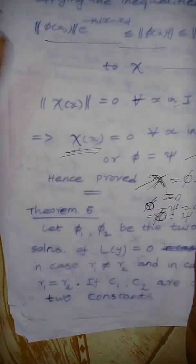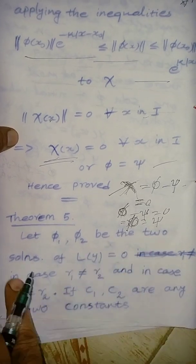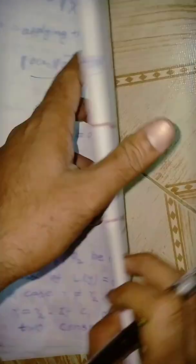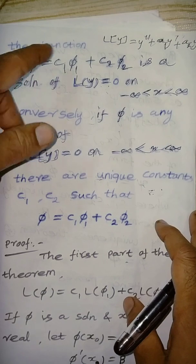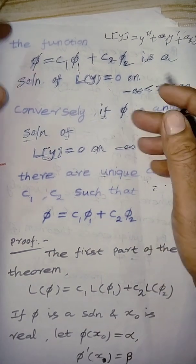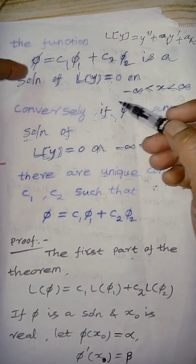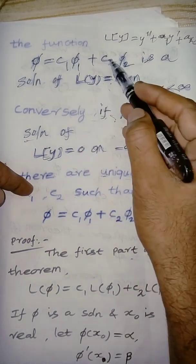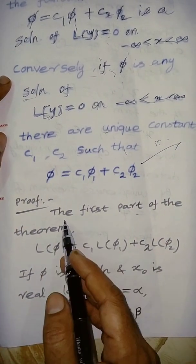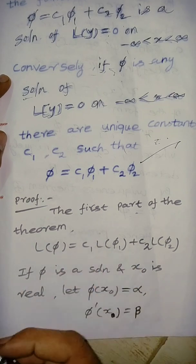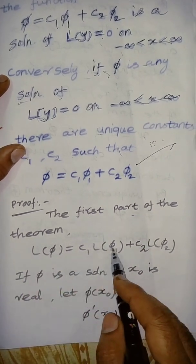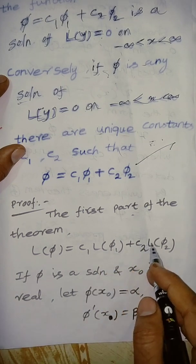If pi is any solution of this second order homogeneous differential equation on the real line, there are unique constants c1 and c2 such that pi equals c1 pi1 plus c2 pi2. This is the theorem statement. So pi1, pi2 are two solutions, different root or same root — already discussed. The converse part: if pi is one solution of the second order differential equation, by linearity L of pi equals c1 L of pi1 plus c2 L of pi2.